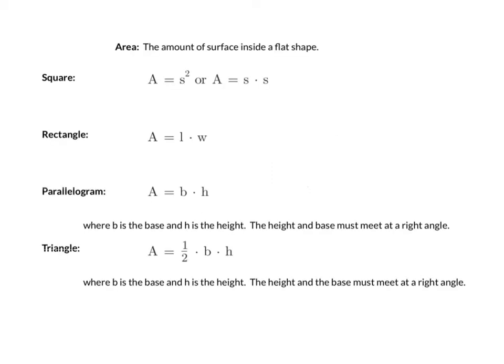In the last presentation we looked at perimeter, and today we're going to look at the second thing that we can find with two-dimensional figures, which is area. Area is defined as the amount of surface inside a flat shape, and we have our four basic figures again as well as the formulas for their areas.